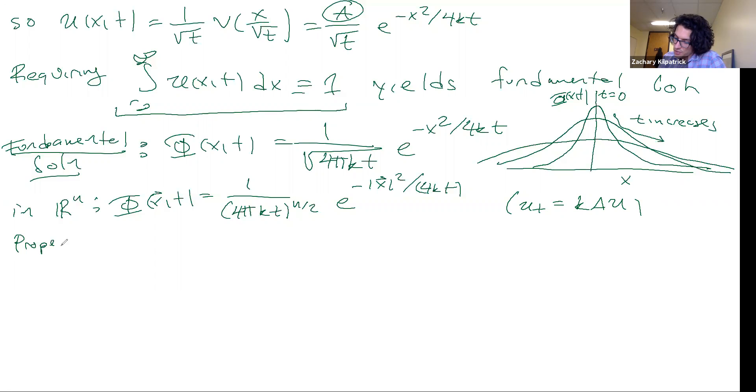And this fundamental solution comes with a few properties, right? So the first of these properties is that phi of X,T, and this holds in Rn in general, is positive.